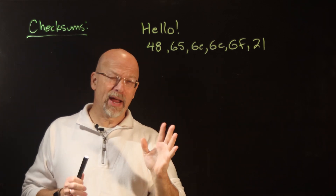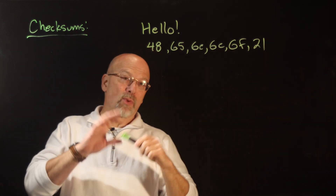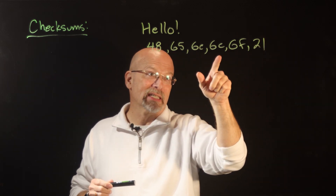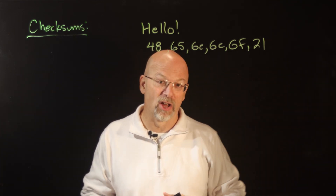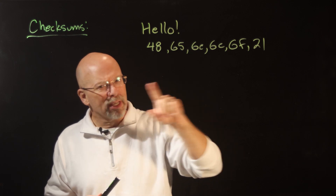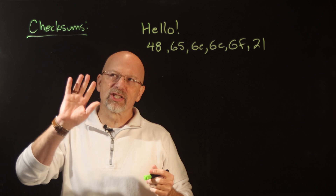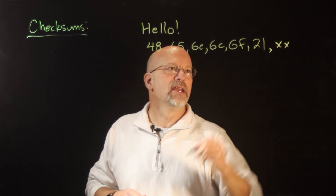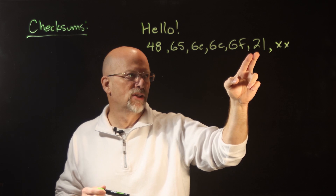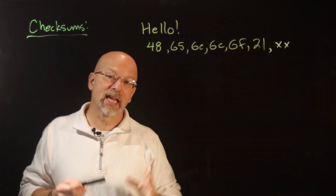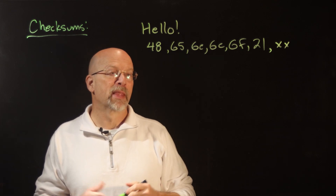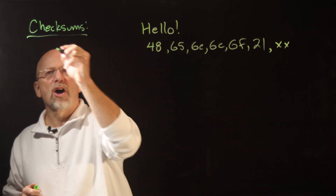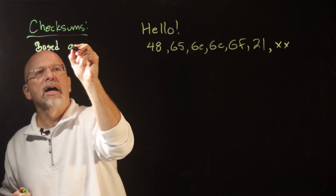With parity, we'd look at the number of ones in the whole stream — concatenating 48, 65, 6C, 6C, 6F, 21 all together into one long serial stream. If we have two bit flips in that stream, parity still looks okay. So instead, we're going to add another byte at the end to check the data. This is all based on something called a data sum, which is simply the sum of the data bytes.